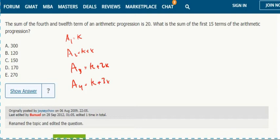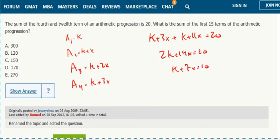Looking for the pattern, a4 equals k plus 3x. So the sum of the fourth term, which is k plus 3x, plus the twelfth term, which is k plus 11x, equals 20. Since 2k plus 14x equals 20, k plus 7x equals 10.